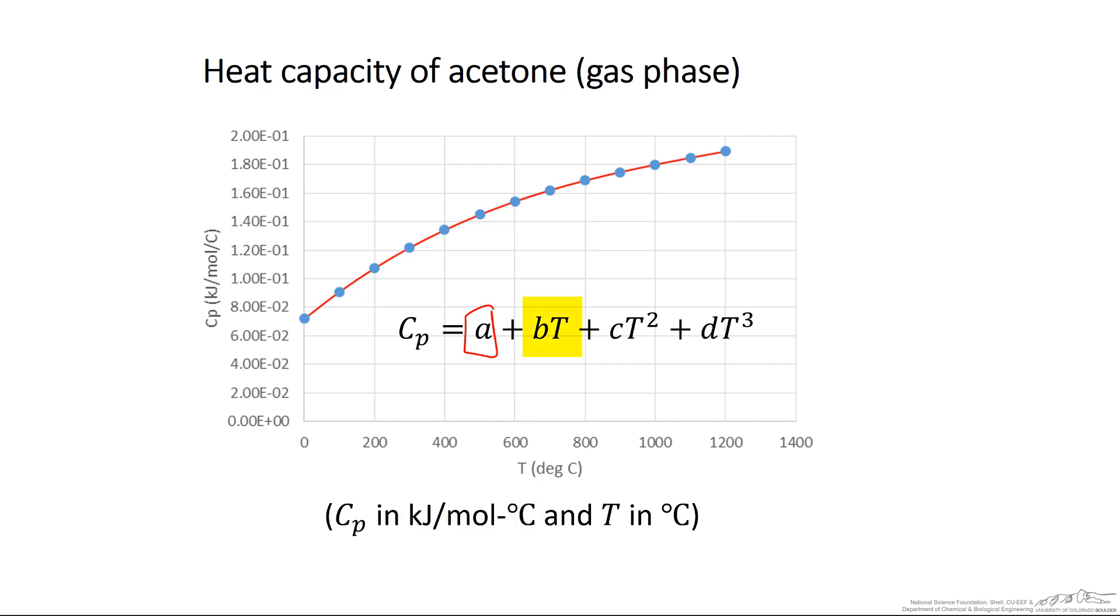When B is multiplied by T, that has to have the units of Cp. So we can calculate what units B must be in. B times T equals kilojoules per mole per degree Celsius, which means B times degrees Celsius equals kilojoules per mole per degree Celsius. Dividing both sides by degrees Celsius, B is in units of kilojoules per mole per degrees Celsius squared. When B is multiplied by T, one degree Celsius cancels, and the product is in kilojoules per mole per degree Celsius.